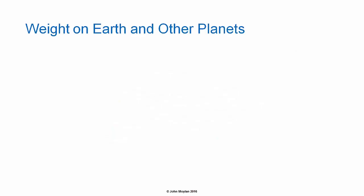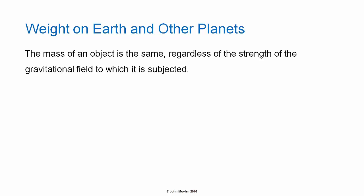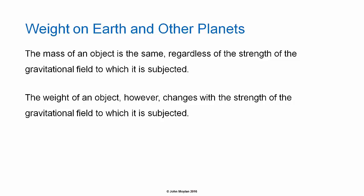Calculating weight on Earth and other planets. The mass of an object is the same regardless of the strength of the gravitational field to which it is subjected — it depends on how much matter it contains. The weight of an object, however, changes with the strength of the gravitational field. Weight is the force due to gravity experienced by an object in response to the gravitational field of another object.